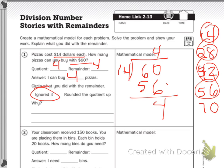Number 2 says, your classroom received 150 books. You are placing them in bins. Each bin holds 20 books. How many bins do you need? So your total is 150 and you're dividing it into 20 books per bin.